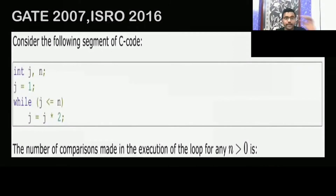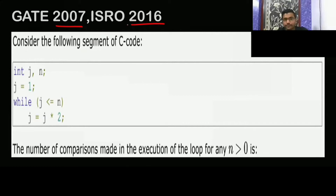Now see the next question. This is asked in GATE 2007 as well as in ISRO 2016. Gate questions are even repeated — they are asking in ISRO exam. They are saying: consider the following segment of C code. The number of comparisons made in the execution of the loop for any n greater than 0.